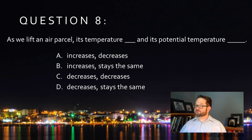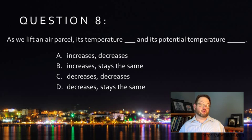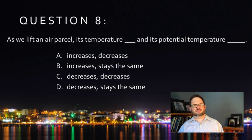Meanwhile, because potential temperature is a conserved quantity, you can do whatever you want to that air parcel. Its potential temperature is not going to change just due to vertical motions.